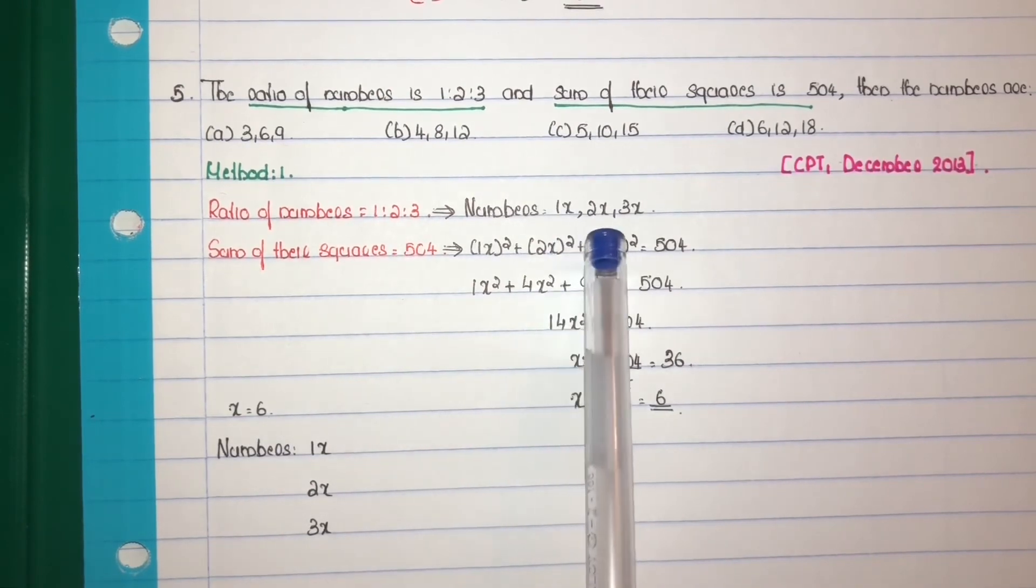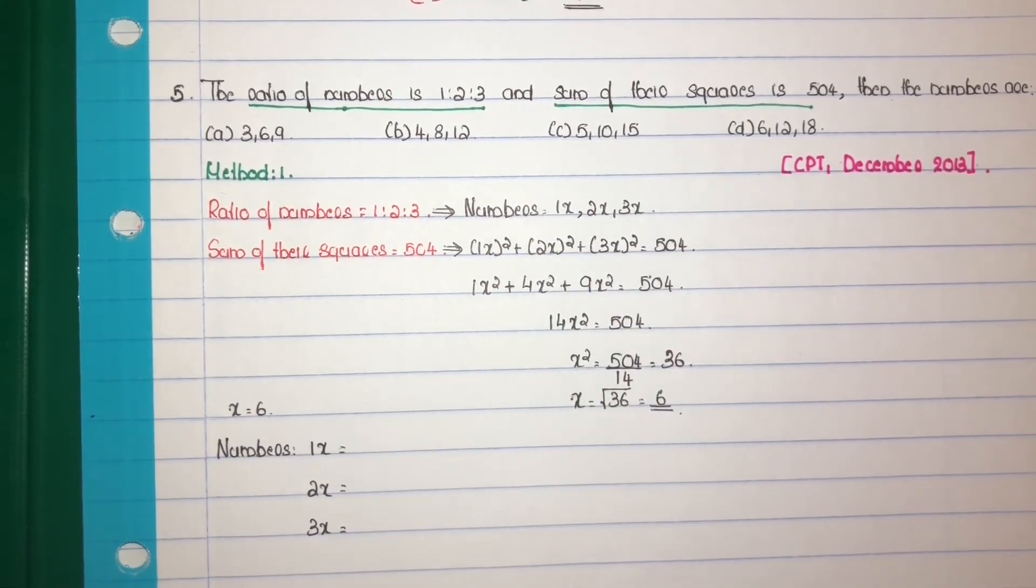So numbers 1x, 2x, 3x equal to 1x equal to 1 into 6 equal to 6. 2x equal to 2 into 6 that is 12. 3x equal to 3 into 6 that is 18. So numbers 6, 12 and 18. Option D.